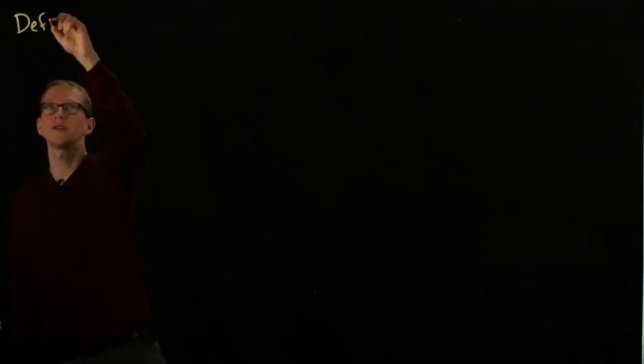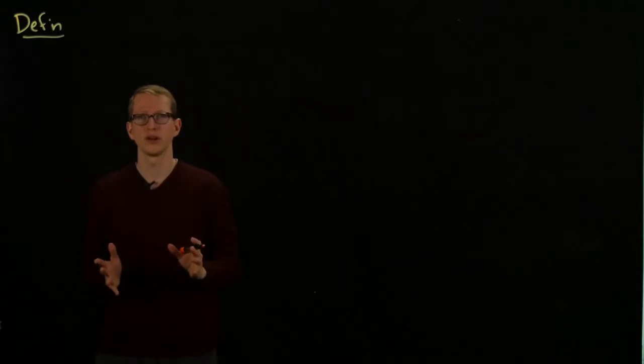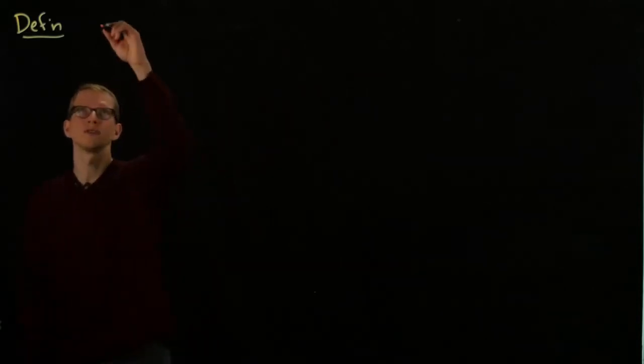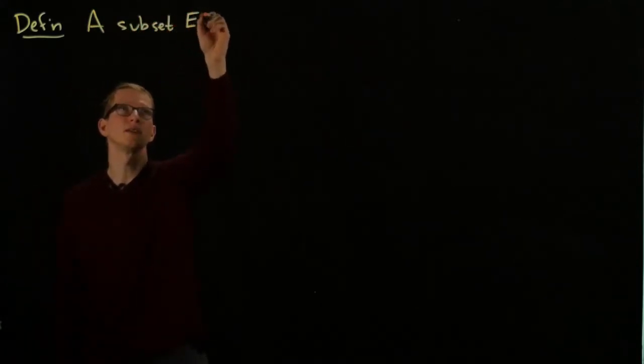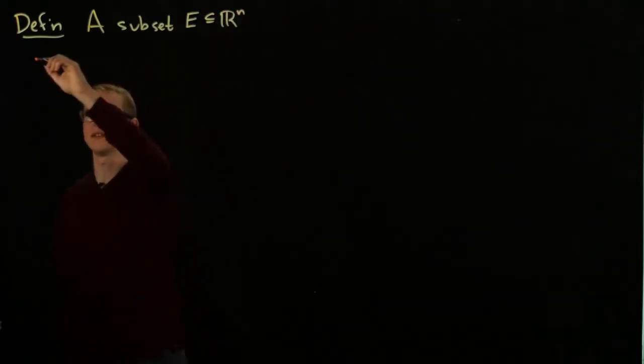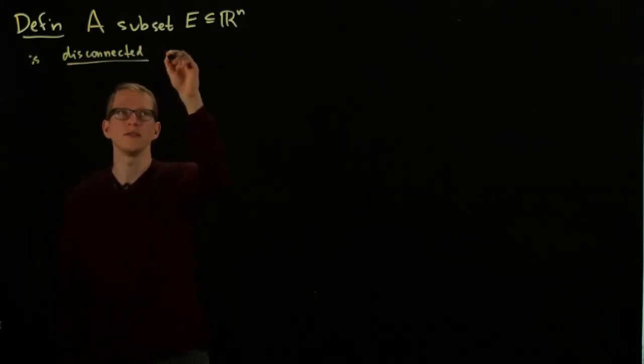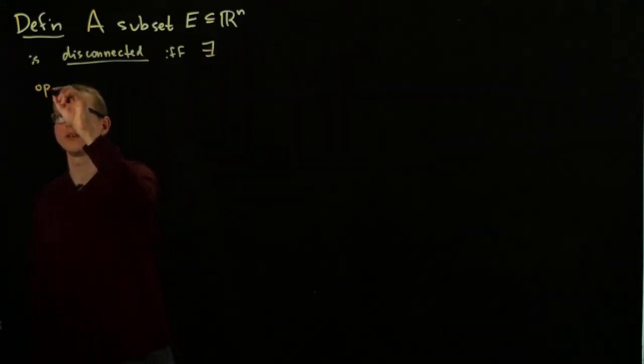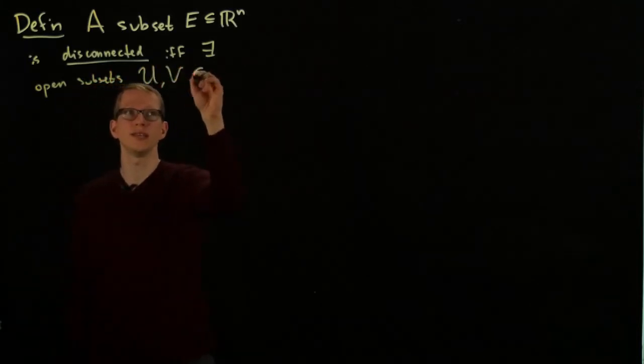First, we recall the topological definition of what it means for a subset of R^n to be connected. This will be exactly the same definition for subsets of R^1. A subset E in R^n is disconnected if and only if there exist open subsets U and V in E.